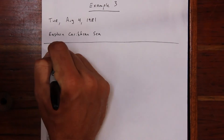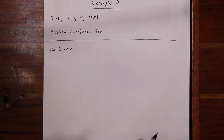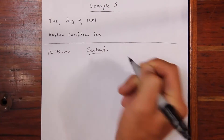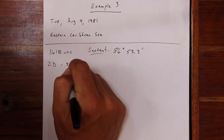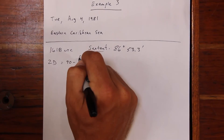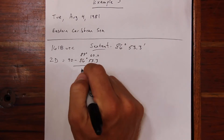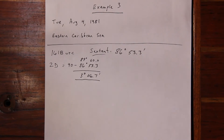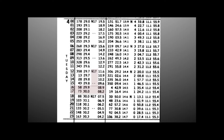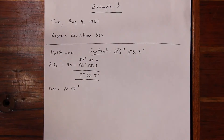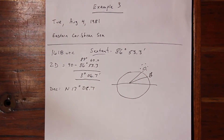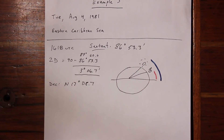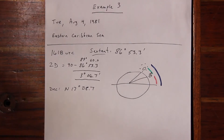In our third example problem, we're in the Caribbean Sea and the time of measurement is 1618 UTC. Our sextant measurement is 86 degrees and 53.3 minutes. To find zenith distance, we subtract from 90 using 89°60', giving 3 degrees and 6.7 minutes. To find declination we must interpolate — it's sufficient to estimate we're 20 minutes into the hour, or one-third of the way through — giving 17 degrees and 8.7 minutes. After drawing our figure, we determine that latitude equals declination minus zenith distance.